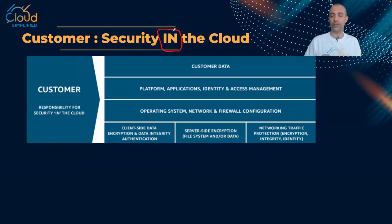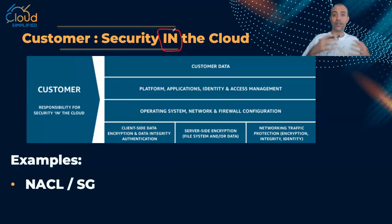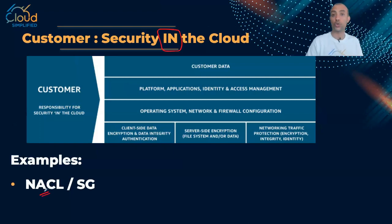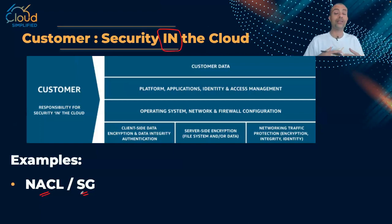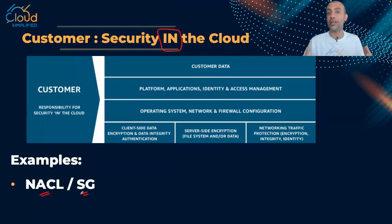Let me give you some examples. If you remember when we talked about networking security, we defined two very important services: network access control lists (NACLs) and security groups. I'll put the link here if you don't remember these two services. In short, NACLs and security groups work like firewalls. Customers need to configure what kind of traffic they want to permit and what kind they want to deny, specifying this in their network access lists and security groups.